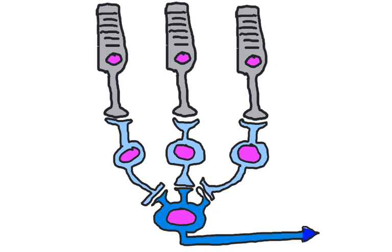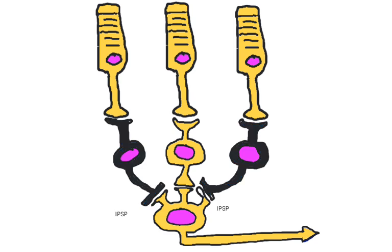On-center ganglia represent a special way that rods summate onto ganglion cells in the retina. The ganglion cell will only fire an action potential if the rod in the middle is stimulated, but the ones on the edges are not. If all of the rods were to fire action potentials, the bipolar cells on the edges would fire IPSPs onto the ganglion cell, thereby inhibiting its activity.